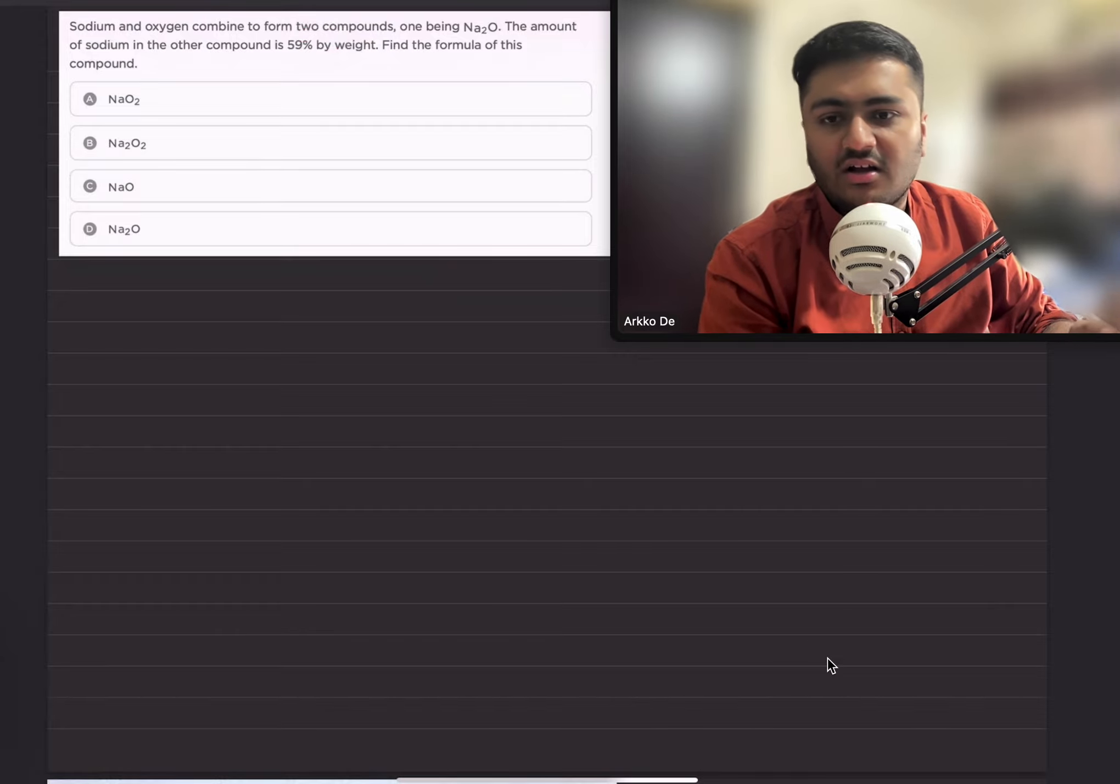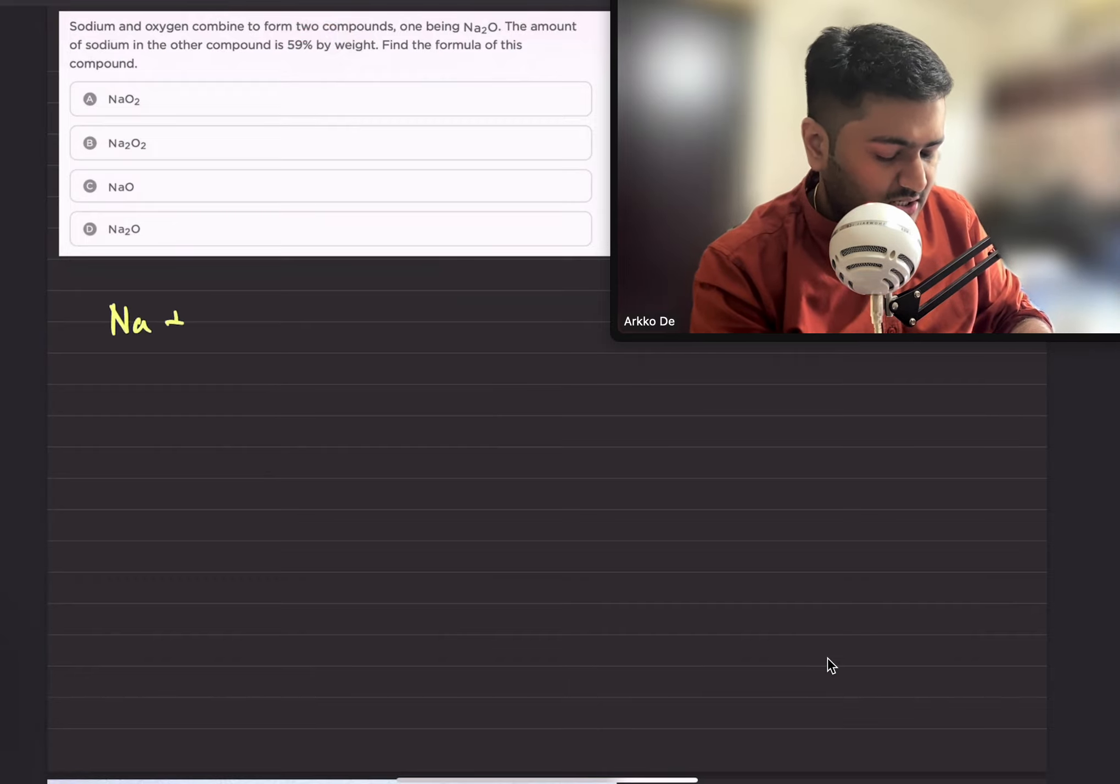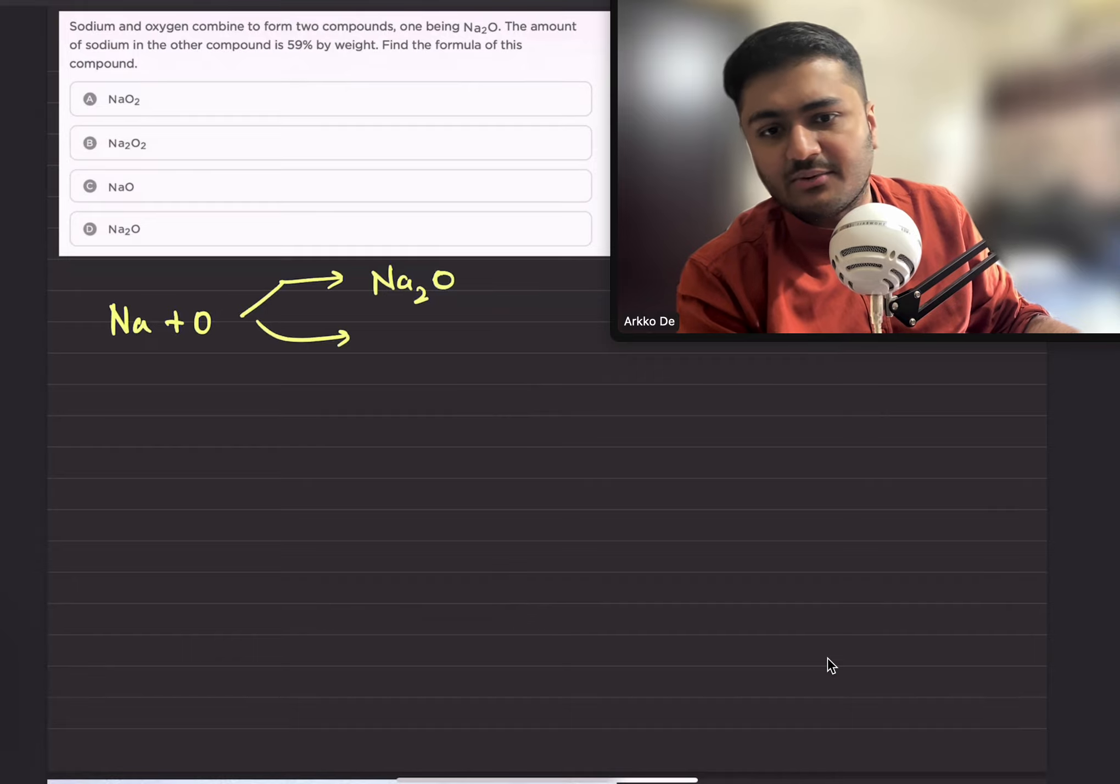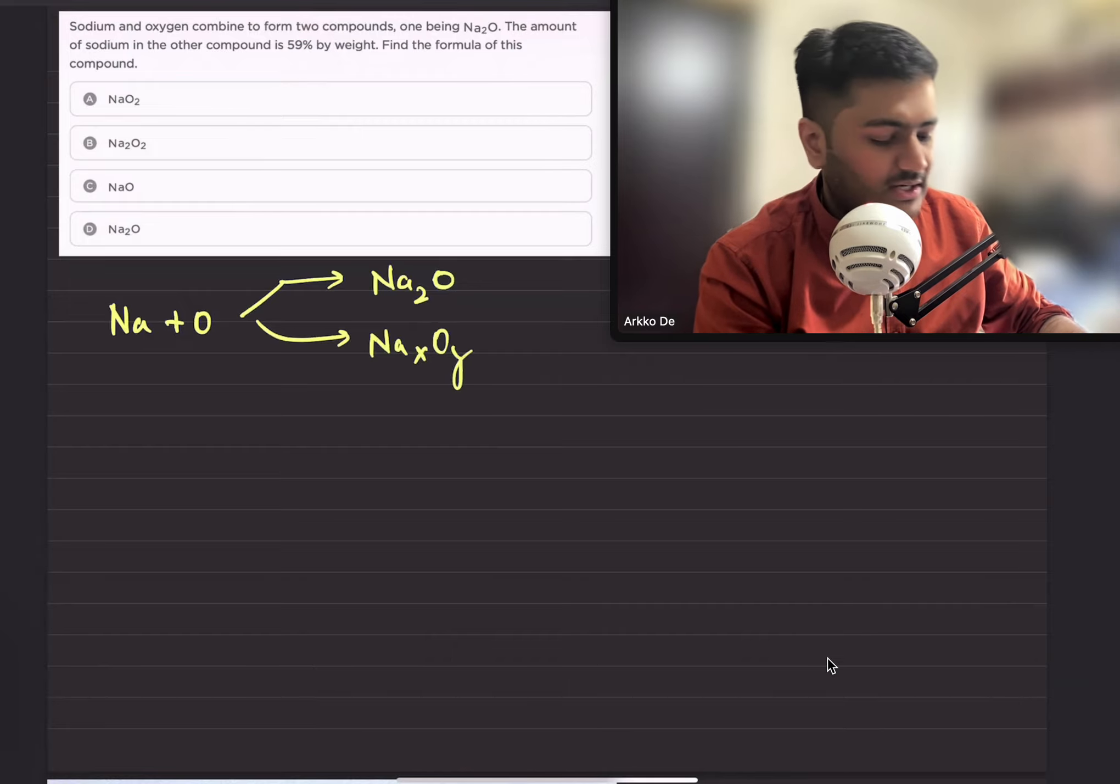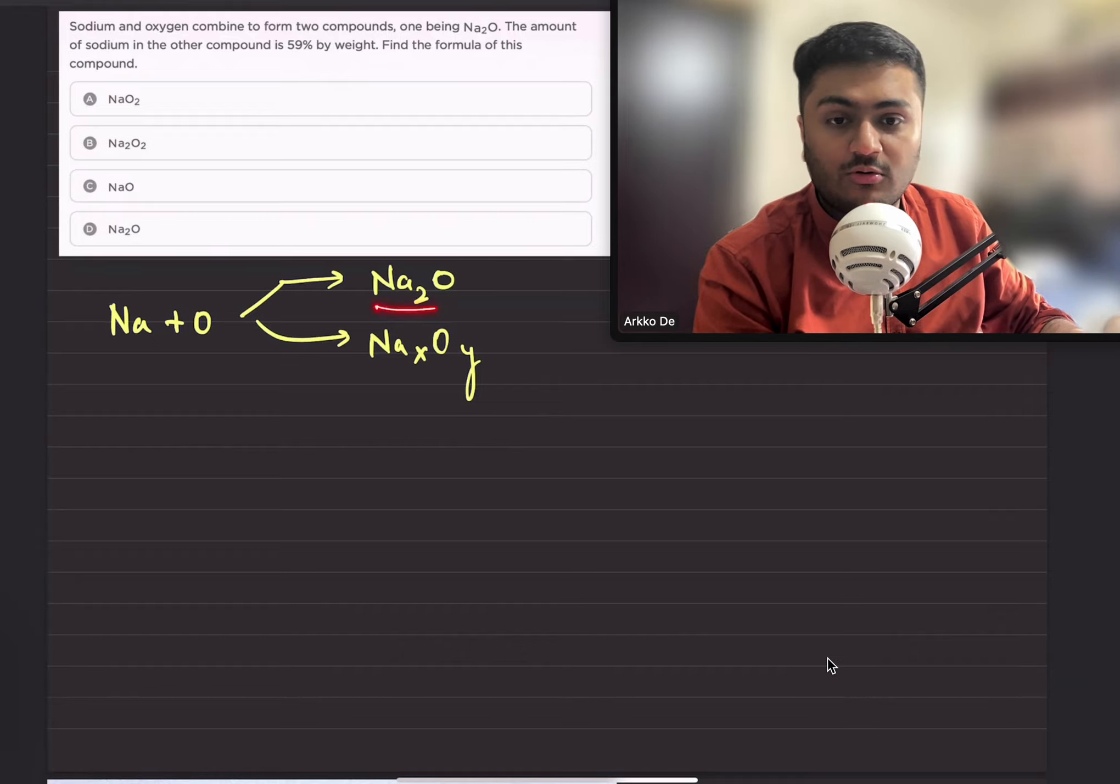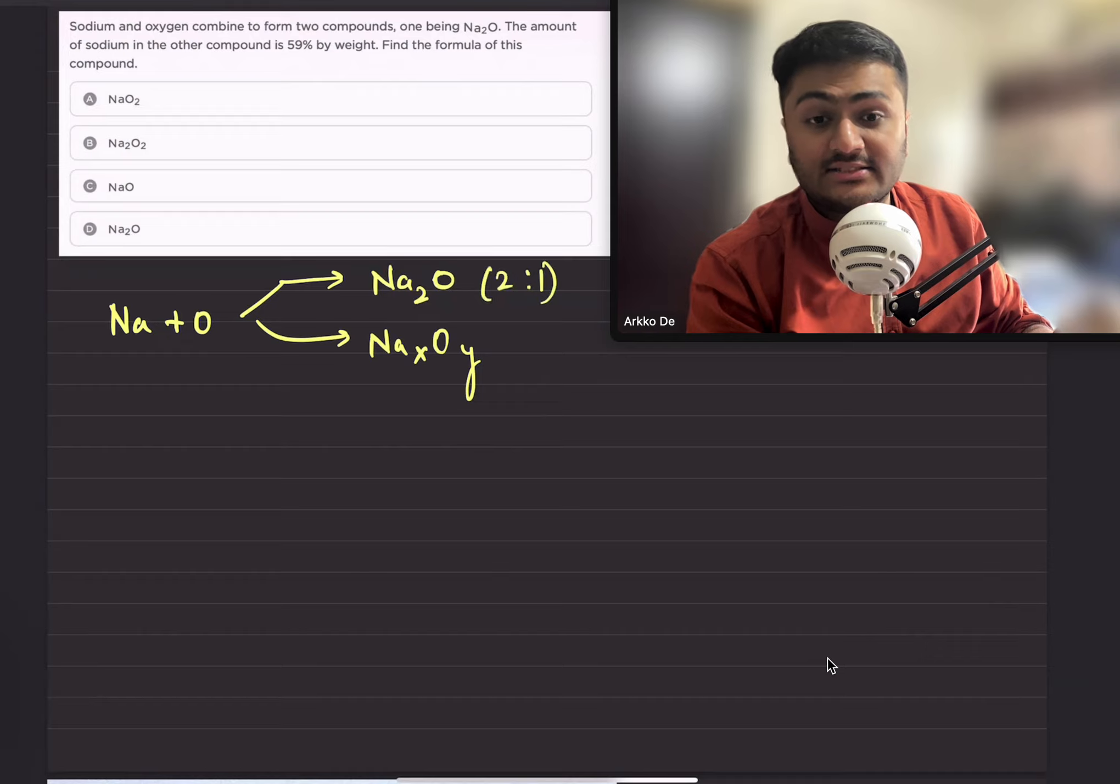In this question, sodium and oxygen are combining to form two compounds. One compound is already given: Na2O. The other compound is Na_x O_y. So there are basically two compounds: Na2O and Na_x O_y. In the first compound,